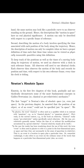Second, describing the motion of a body involves specifying the time associated with each position of the body along the trajectory. Hence, the description of motion can only be complete when we have a proper definition of time such that these time values can be viewed as physically measurable quantities using this definition. To keep track of the positions as well as the times of a moving body along its trajectory, we need an observer with a clock in each reference frame. All observers will need to use identical clocks. Each observer then observes the motion of the body and records its position and time with respect to his own reference frame every time his clock is ticking.